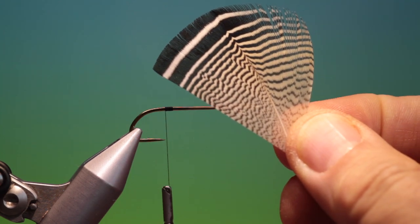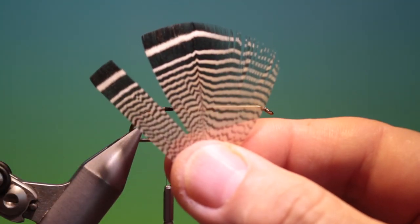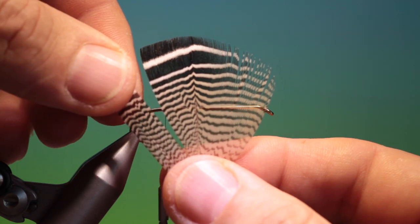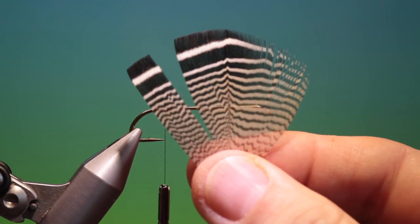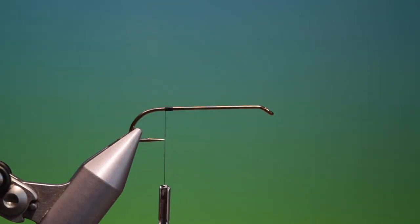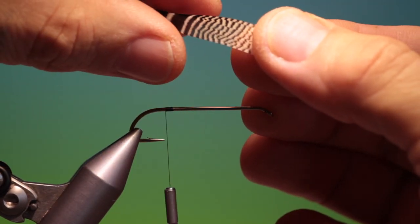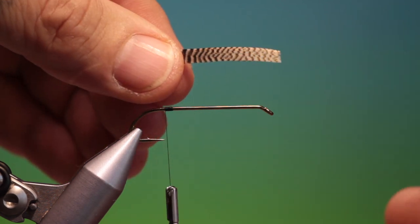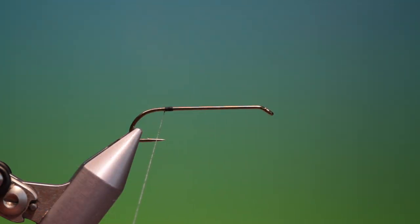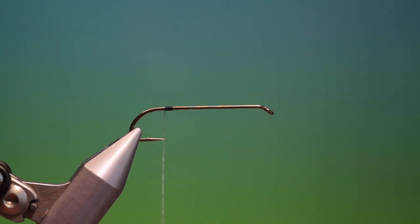Then we need a barred wood duck. Hold it at the tip like that and we straighten out these barbs at the end. Then we cut the strip off and we fold it in half like so. Firstly I want just a little bit of wax on top there.